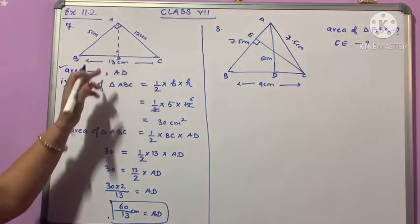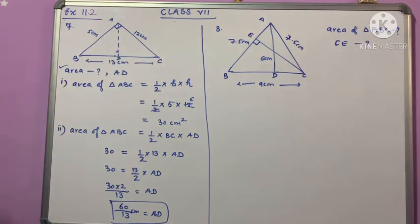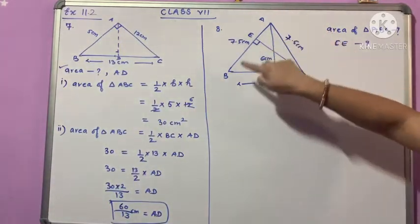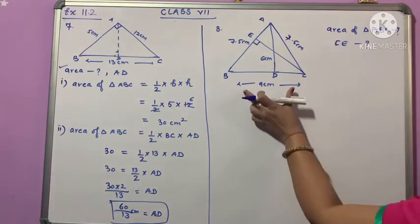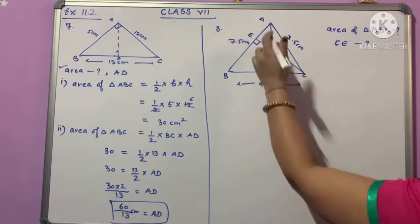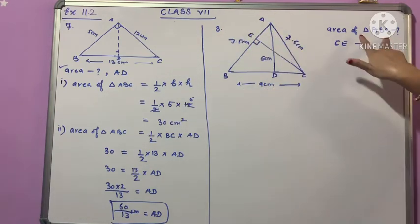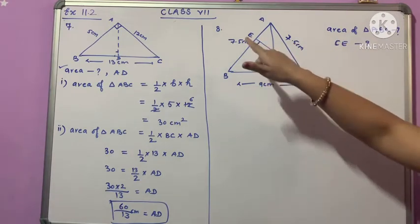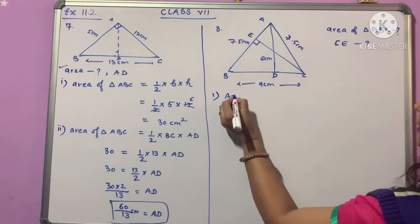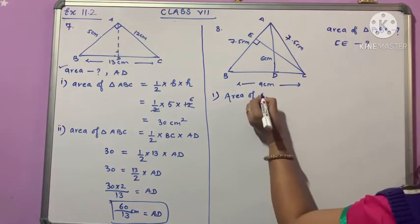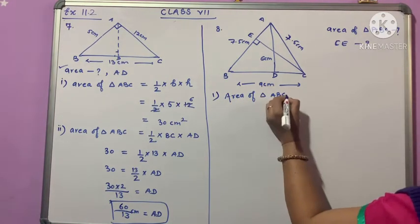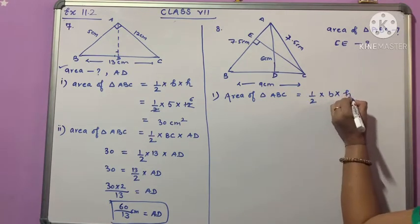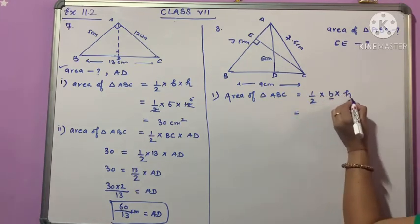It is an easy question, just the same pattern. Now for part two, the second triangle is given with different measurements. Let's start: Area of triangle ABC using the same approach.